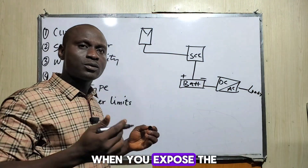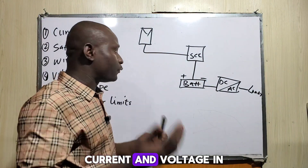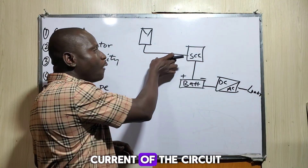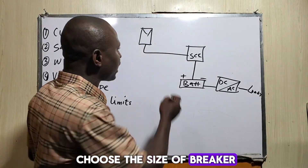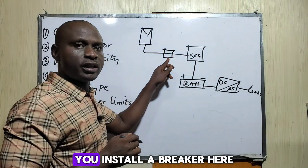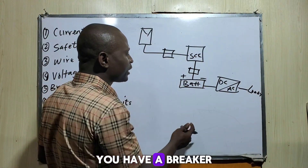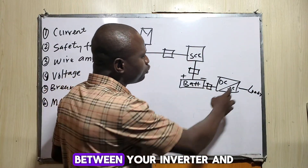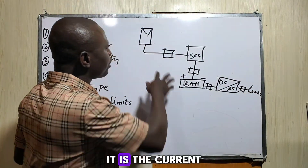When you expose the solar panels to the sun, they start generating current and voltage in DC form. The normal operating current of the circuit is what you take into consideration when choosing the size of breaker between the solar panel and the charge controller. You will install a breaker there. Between the solar charge controller and the battery, you will have a breaker.